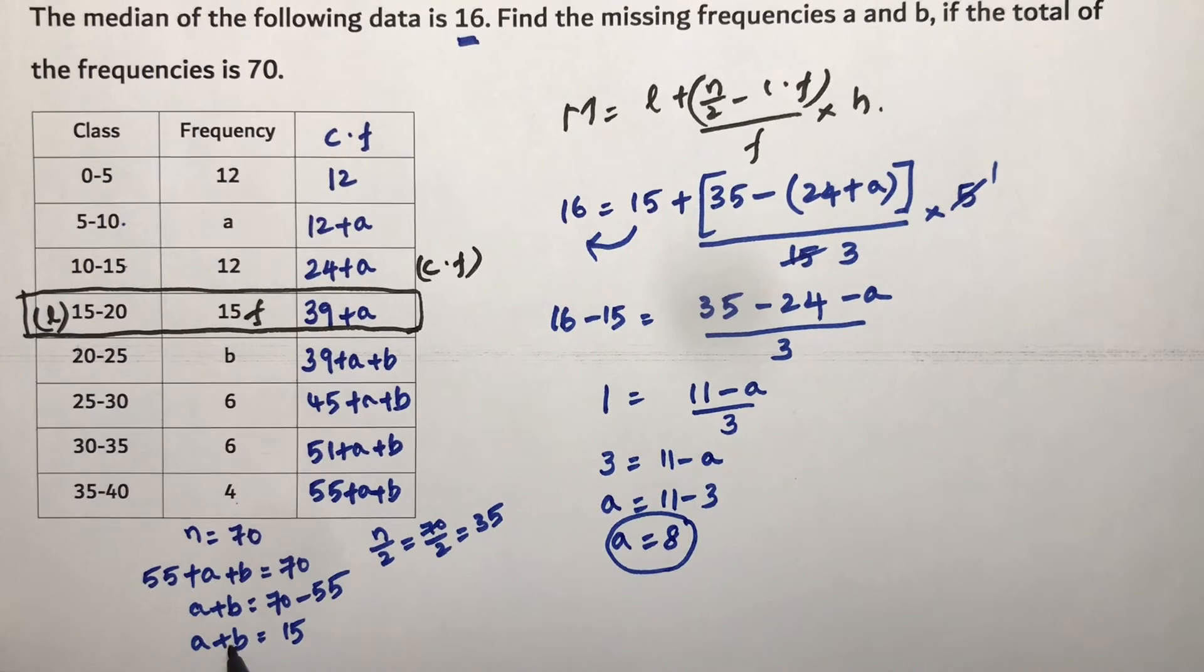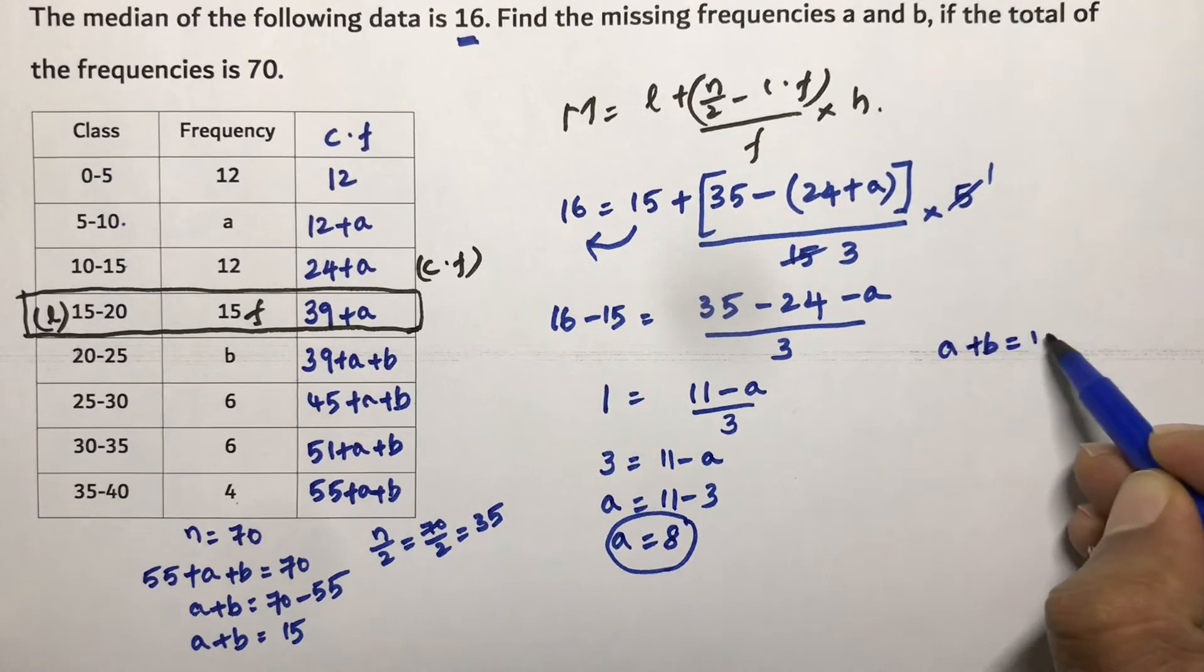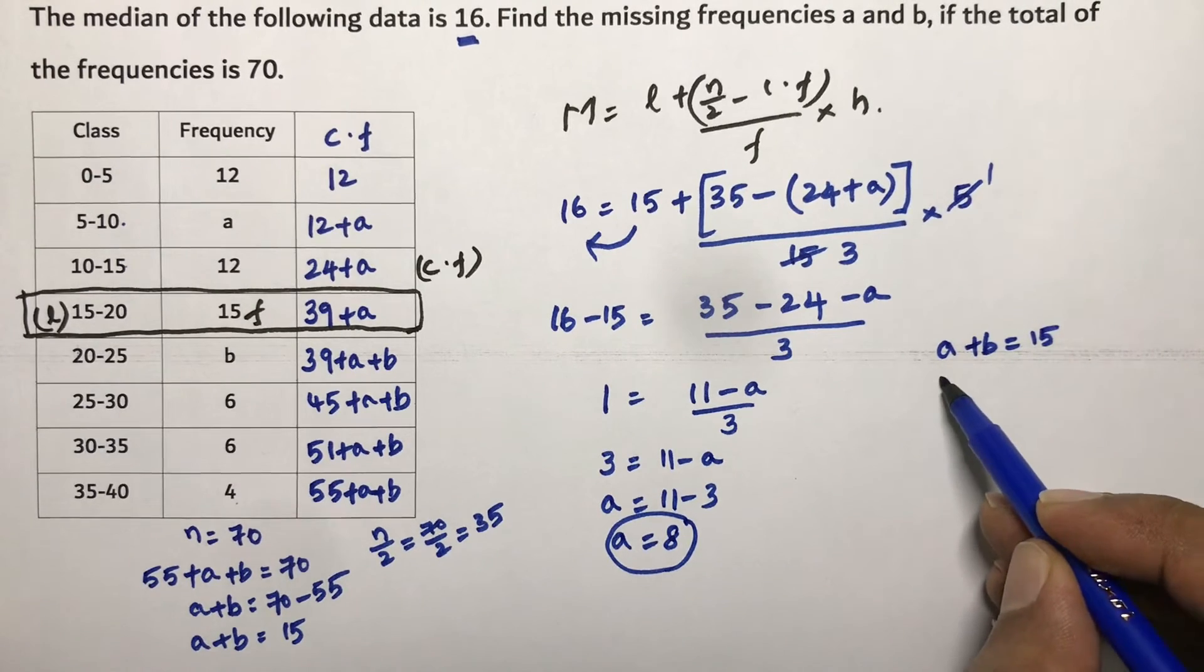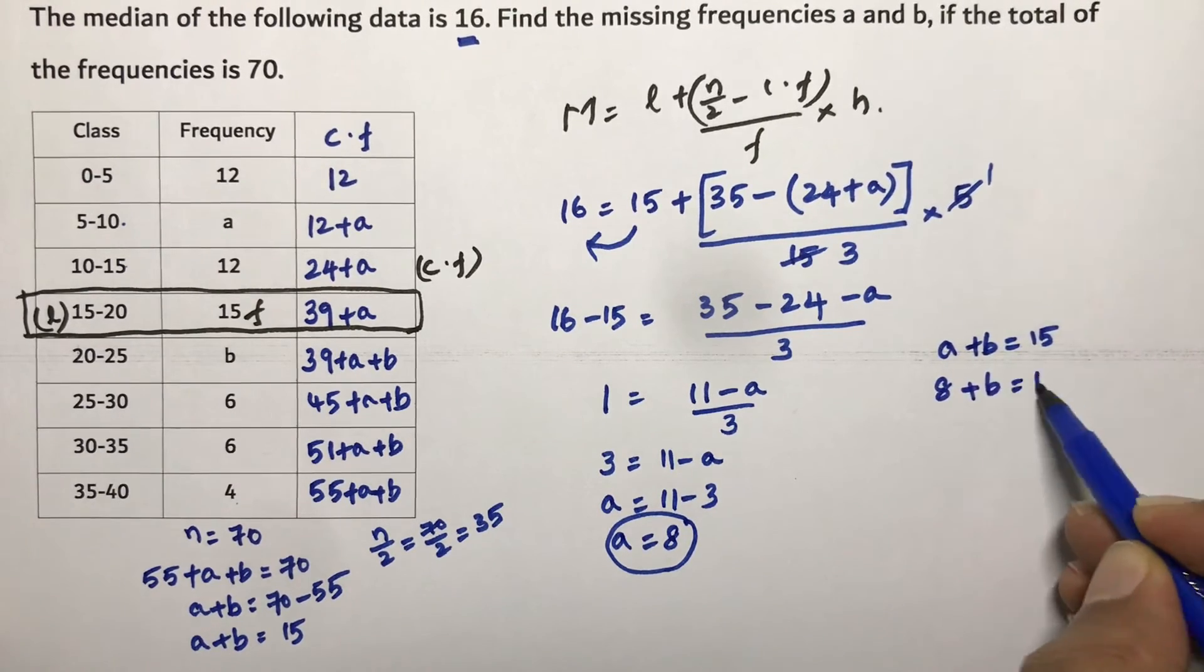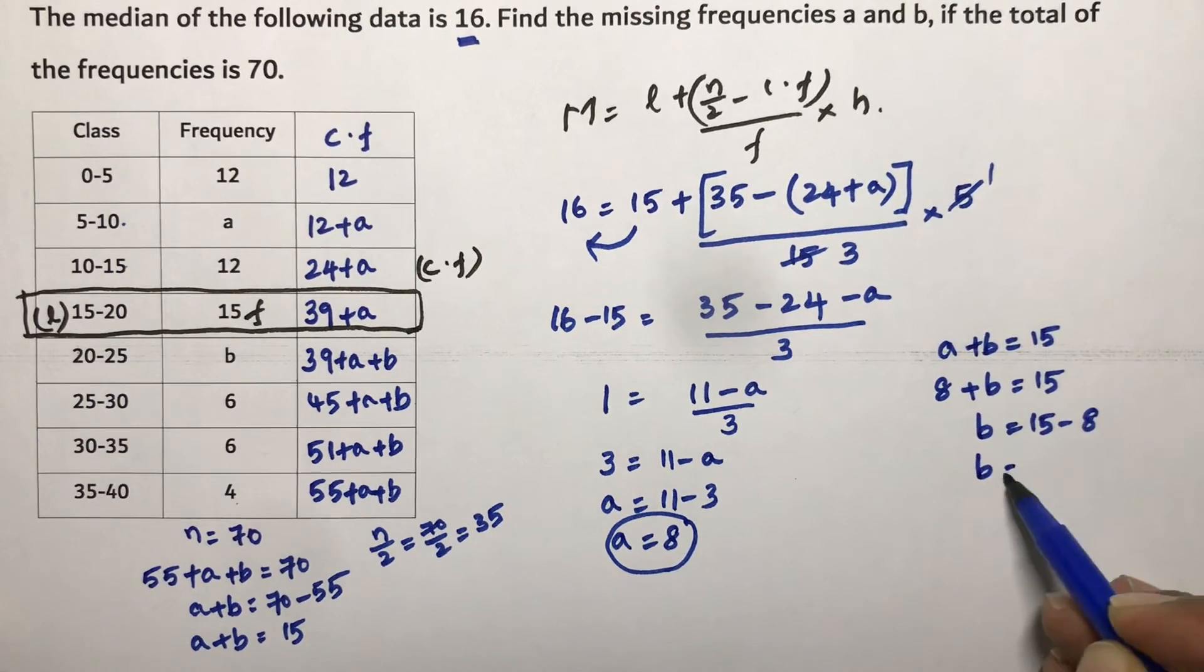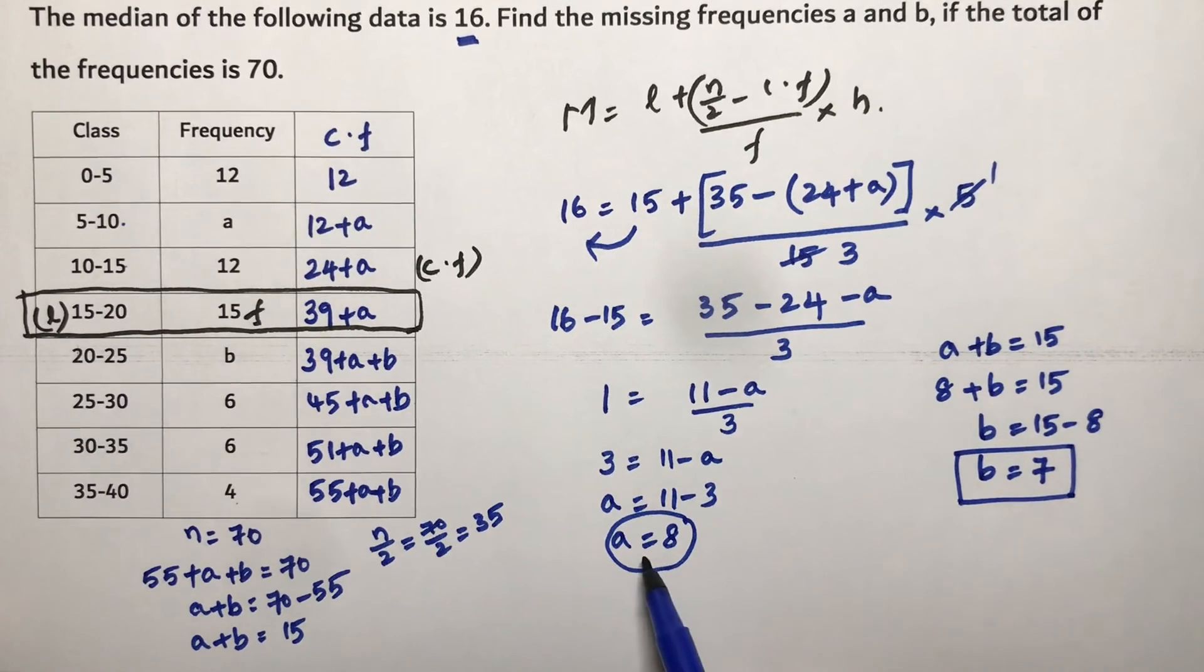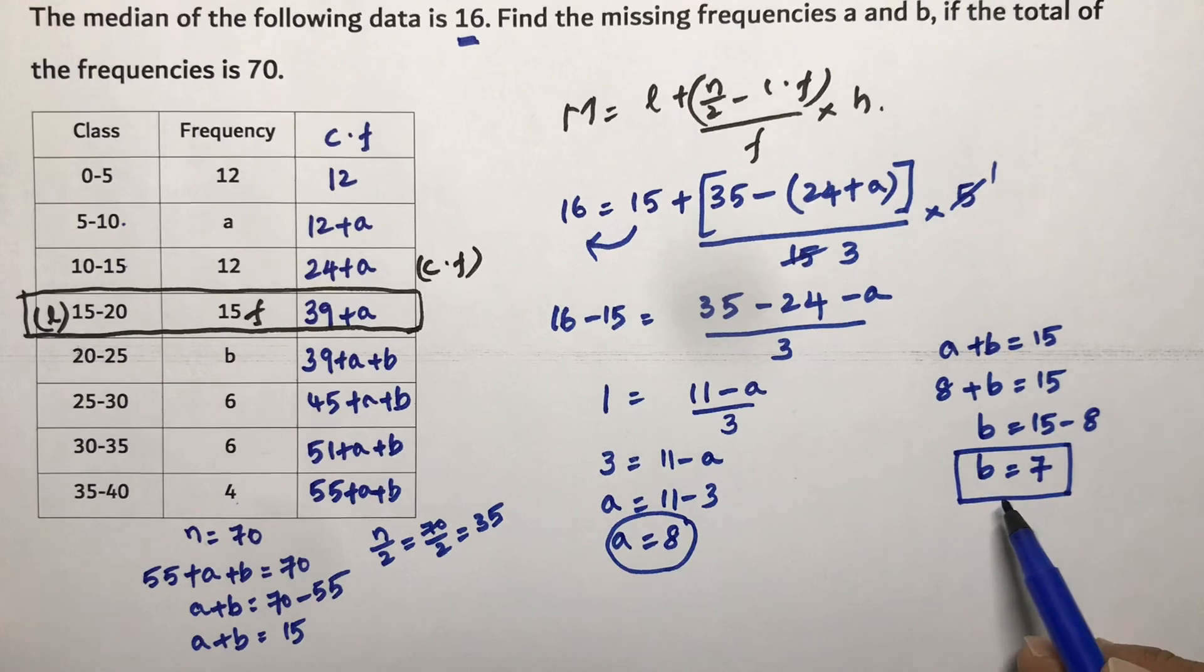Now if you take this a value and substitute here, a plus b is 15. a is 8 plus b is 15. So b equals 15 minus 8. So the value of b is 7. Therefore the missing frequencies are a is 8, b is 7.